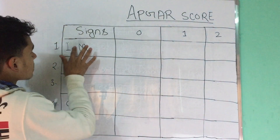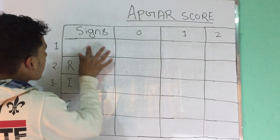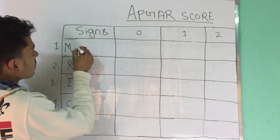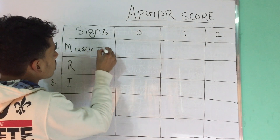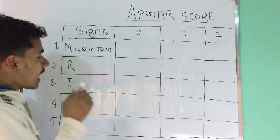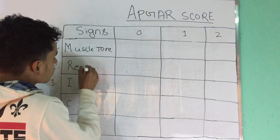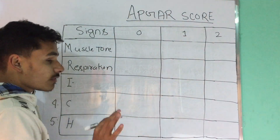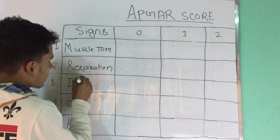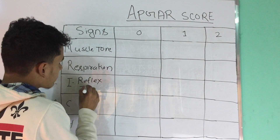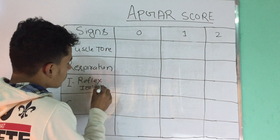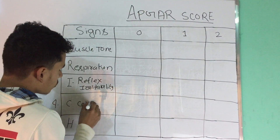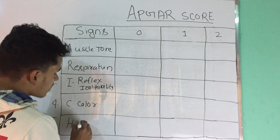So what are the meanings? 'I am' has no meaning on its own. In 'I am RICH': M means Muscle Tone, R means Respiration, I means Reflex Irritability, C means Color, and H means Heart Rate.